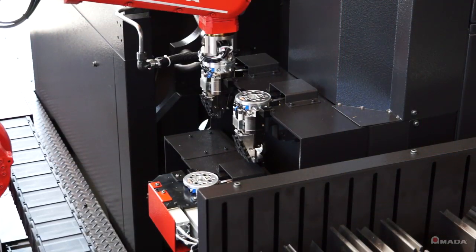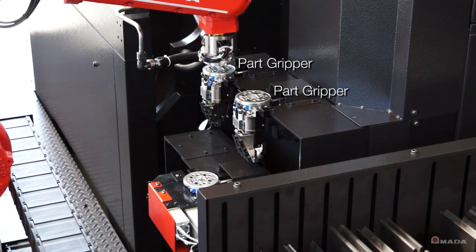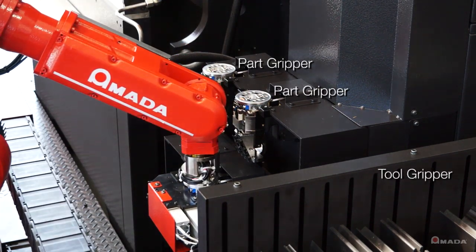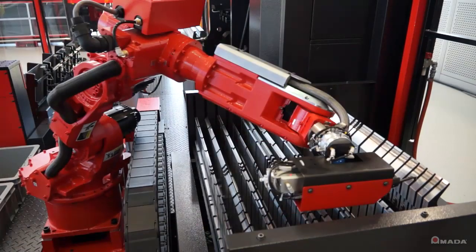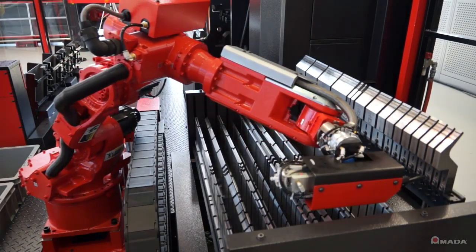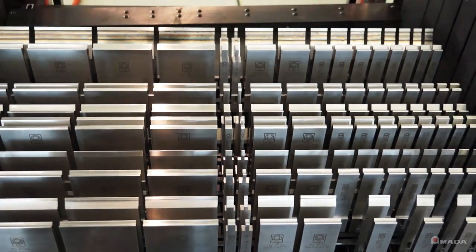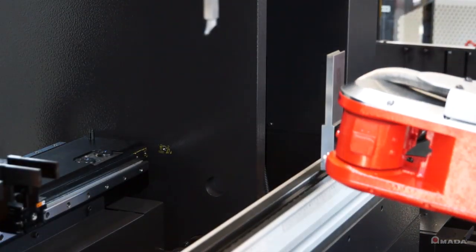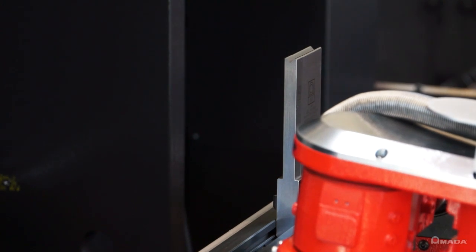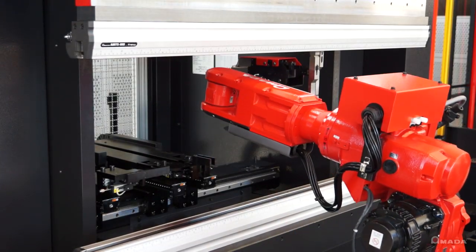The gripper station holds two grippers designed specifically for holding small parts and a gripper for tool loading. When a new program is started, the robot selects the tool gripper and loads tooling from the 10-rack tool stocker. The robot quickly and accurately loads tooling along the press brake and also has the ability to reverse mount the punch tooling.